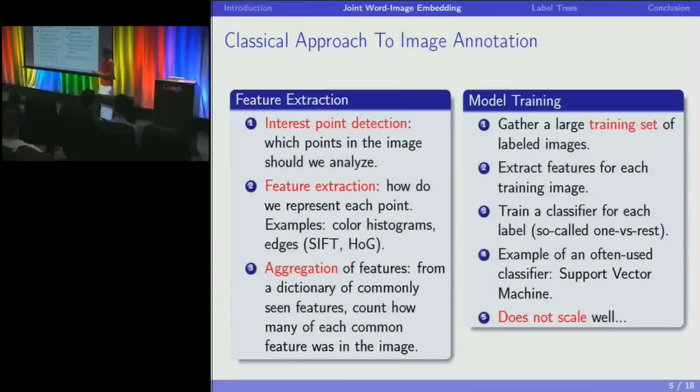How is image annotation done in the literature? There are two steps. Most people in computer vision have focused on the first step: feature extraction. Someone gives you an image — a JPEG from your camera. You extract relevant information from that image to pass to a model that will classify or annotate it. There are various ways to do this.